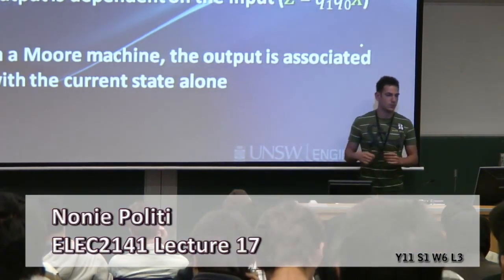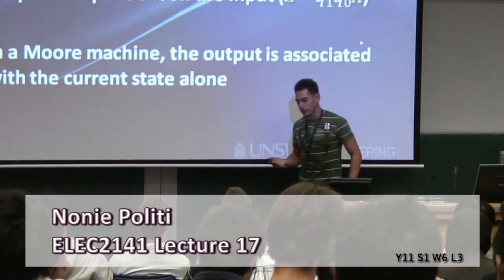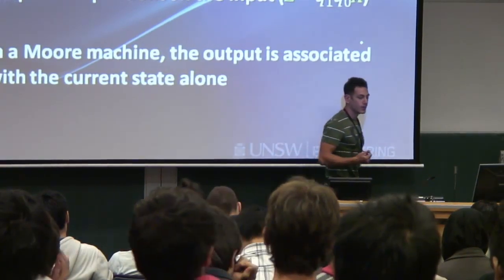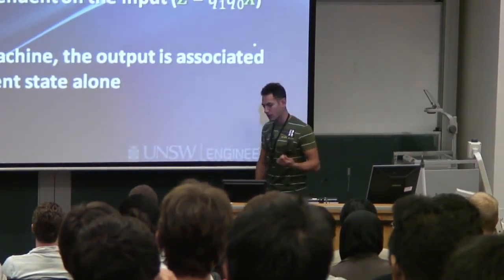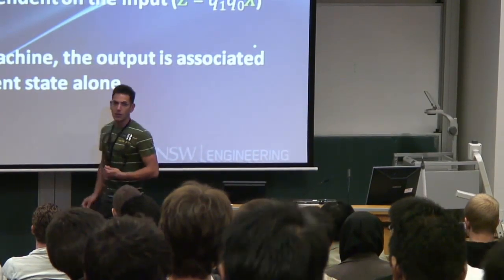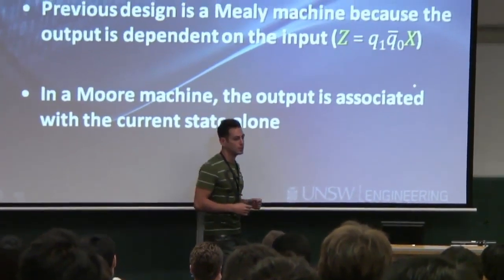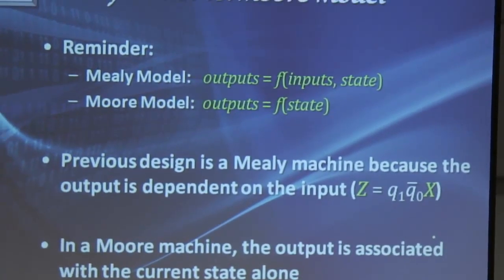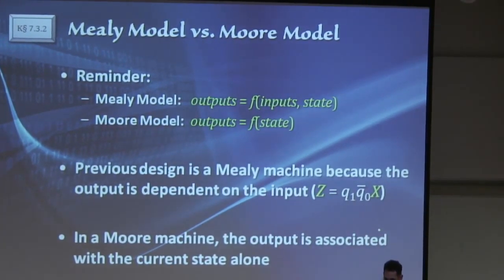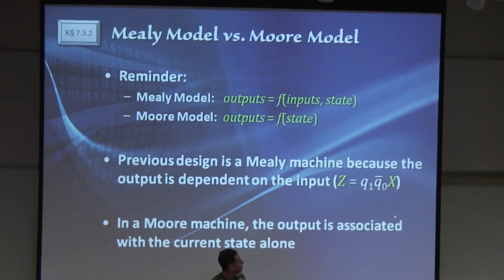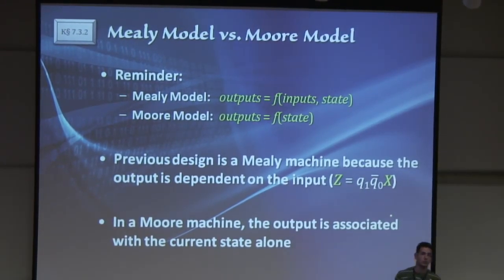Today's lecture is going to be fairly short because we've done quite a lot yesterday. What we're going to talk about today is the Mealy model versus the Moore model. If you remember, in the first few lectures we said the next states are always dependent on the current state and the inputs, where the outputs are either a function of the inputs and the current state — making it a Mealy model machine.